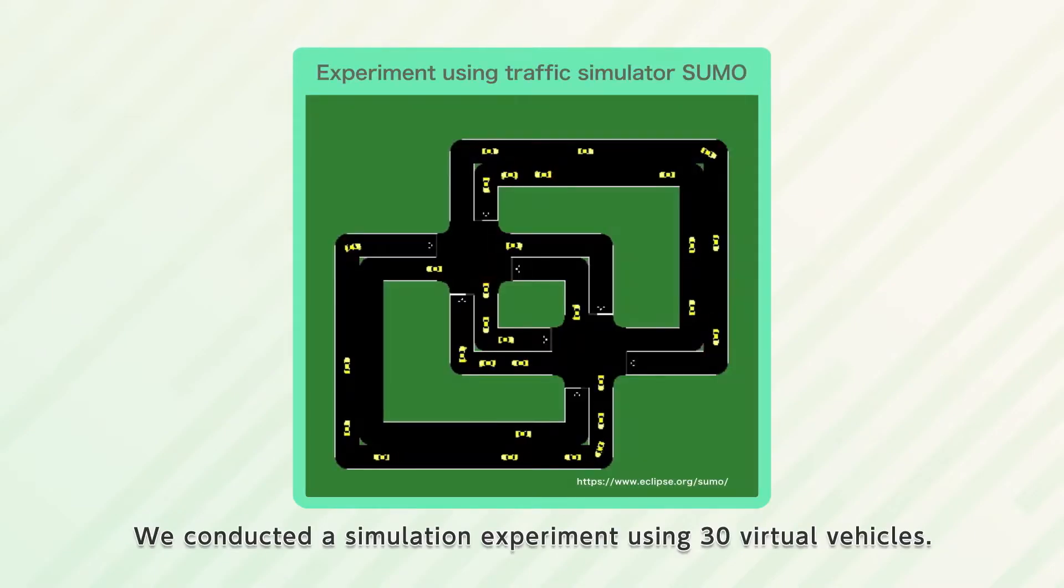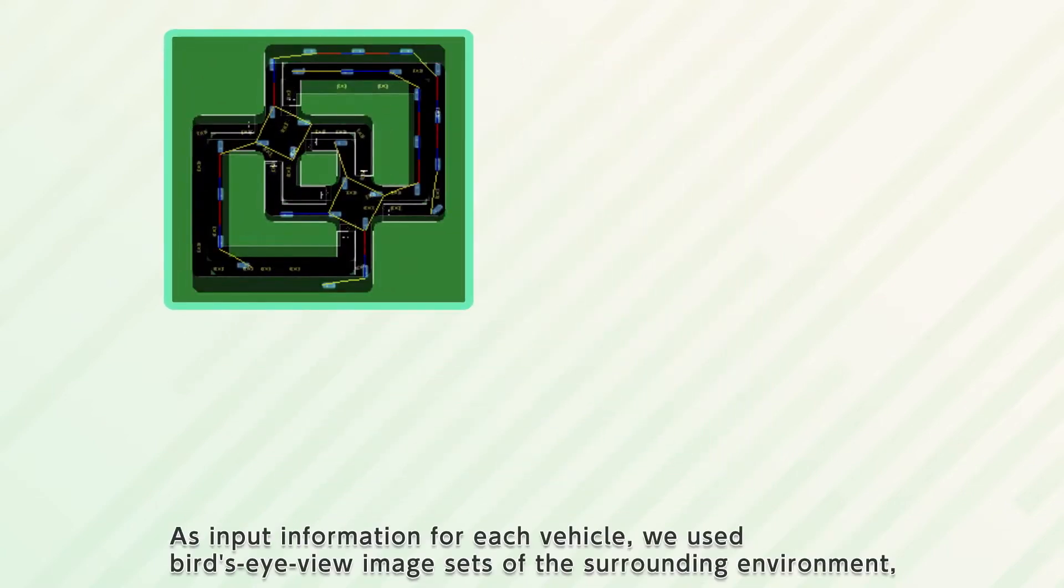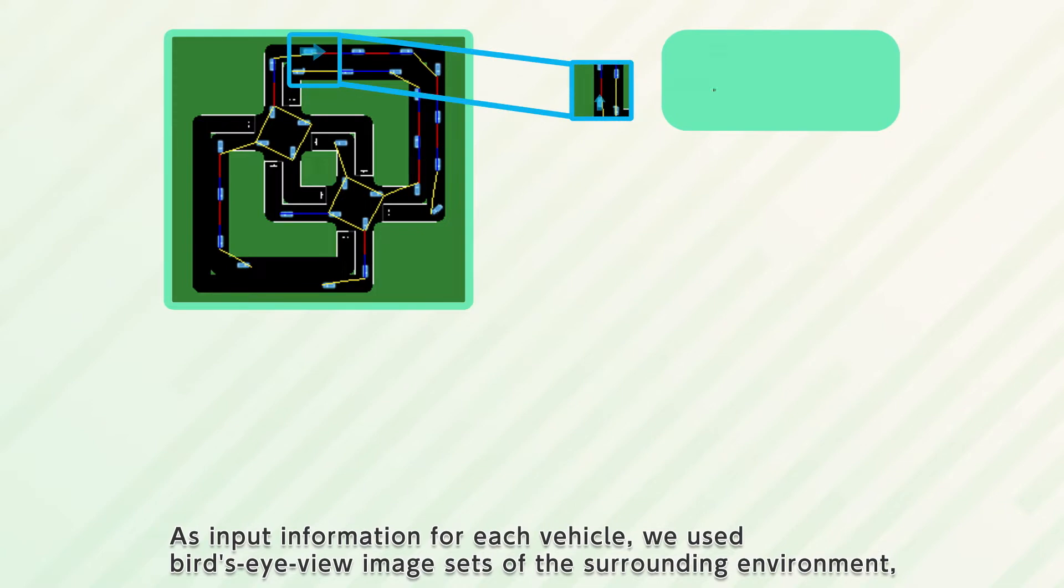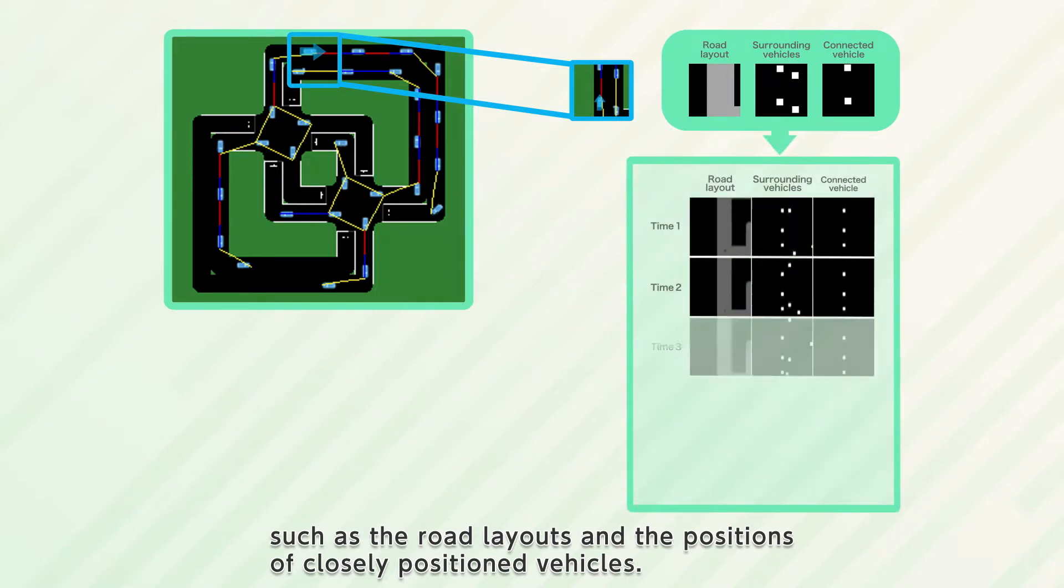We conducted a simulation experiment using 30 virtual vehicles. As input information for each vehicle, we used bird's-eye view image sets of the surrounding environment such as the road layouts and the positions of closely positioned vehicles.